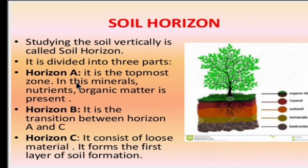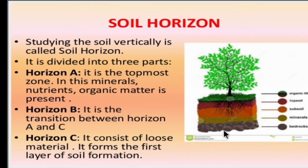The topmost layer is called Horizon A — that is your organic matter: grass, leaves, and plants. Below that is Horizon B, and deep inside is Horizon C. The middle layer is composed of both organic matter and mineral matter. This vertical section is referred to as the soil profile.